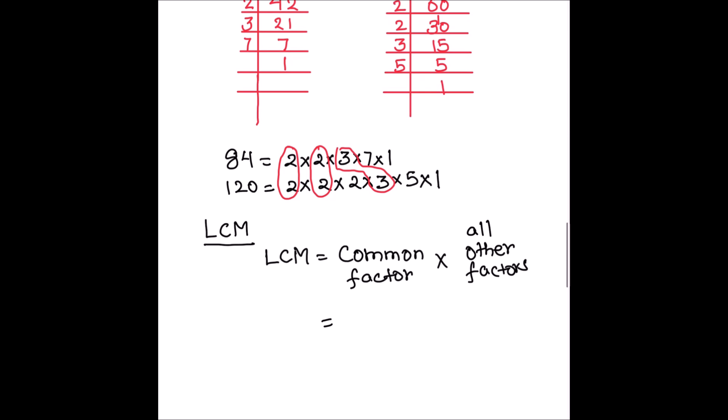So LCM will be the common factors: 2 times 2 times 3. Common factors we write only once. And all other factors are 7 times 2 times 5.